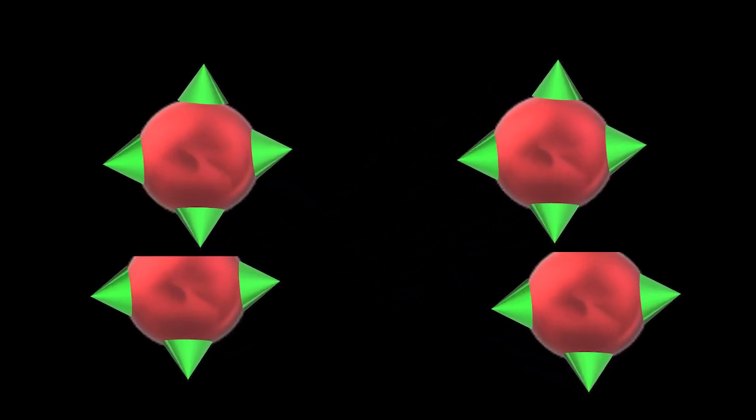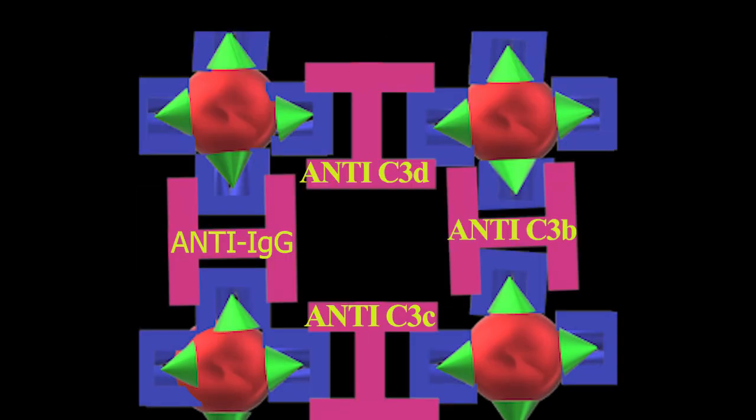Poly-specific reagent contains anti-human IgG antibodies, anti-complement 3B, complement 3C, and complement 3D. Monospecific reagents are also available for each anti-human antibody for specific antibody detection.